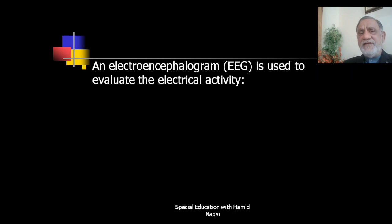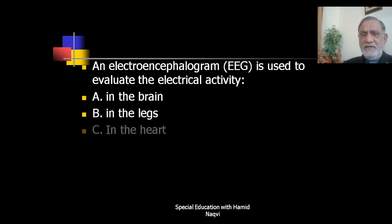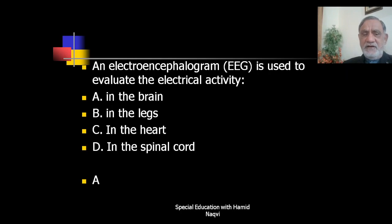Next question: An electroencephalogram (EEG) is used to evaluate the electrical activity in which location — the brain, the legs, the heart, or the spinal cord? The correct answer is A — an EEG is used to evaluate the electrical activity in the brain.